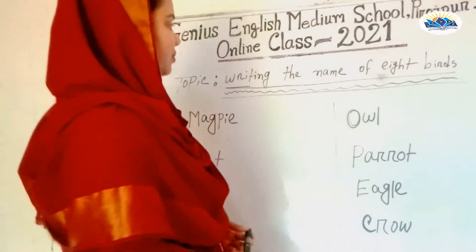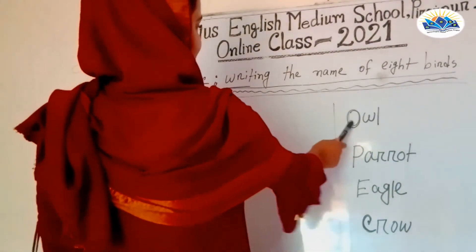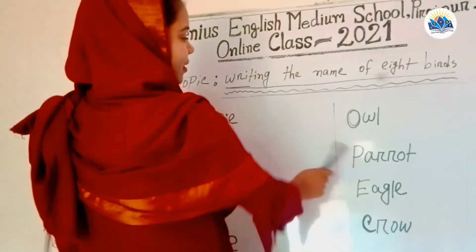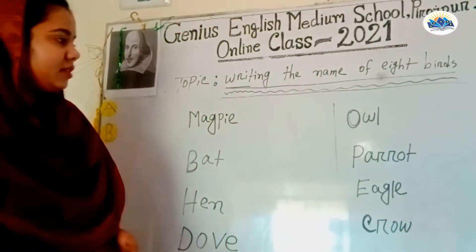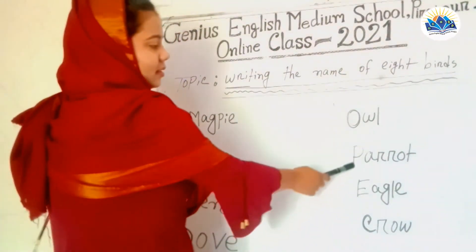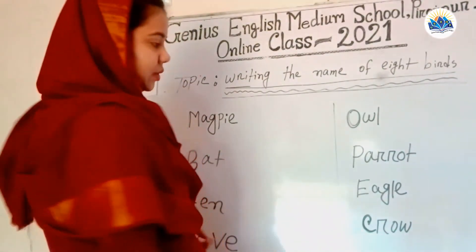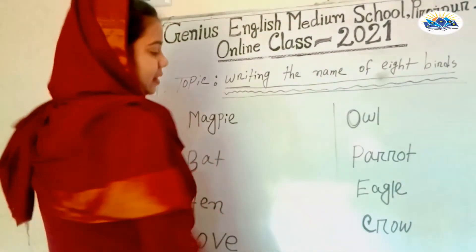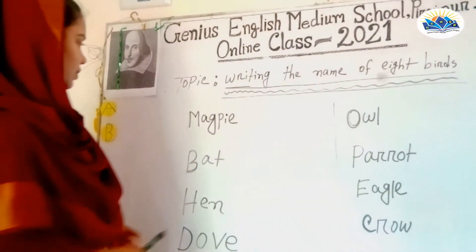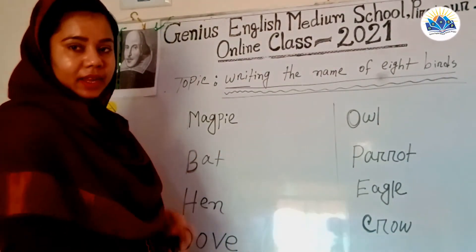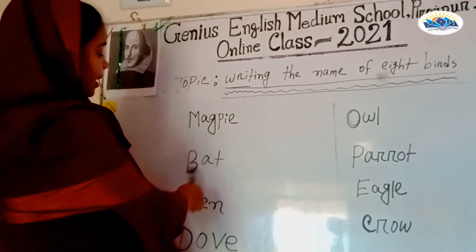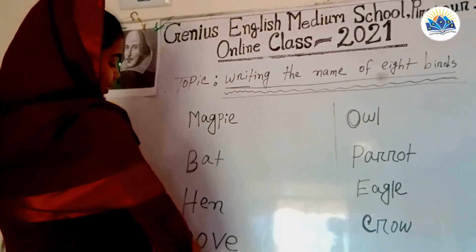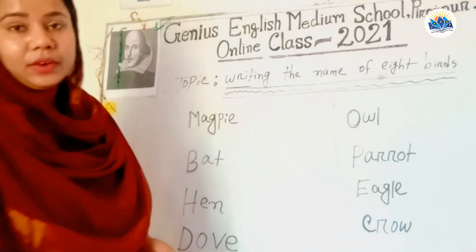This is owl. This is dove. This is parrot. This is eagle. This is crow. This is magpie. This is bat. This is hen. This is dove.